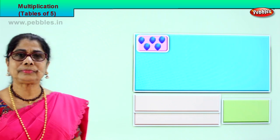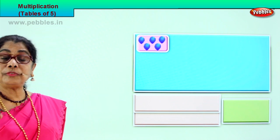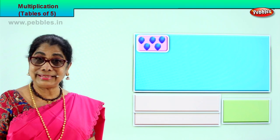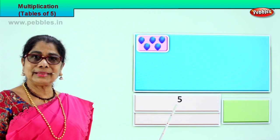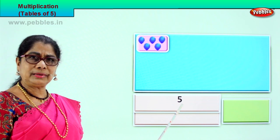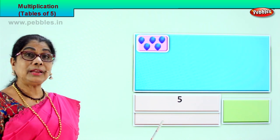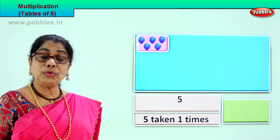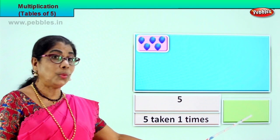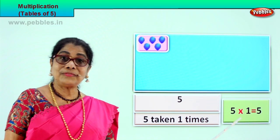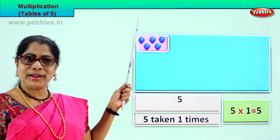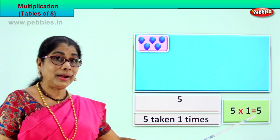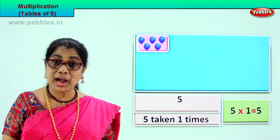Look what you have here. There is a box, a group of five balloons, put into one box. One, two, three, four, five. So this five, we write the five here. How many times is five taken? One time. Five taken one time. How do we write this? Five into one is equal to five. How do we read this? Five ones are five. One group of five. Five into one, five. Good.